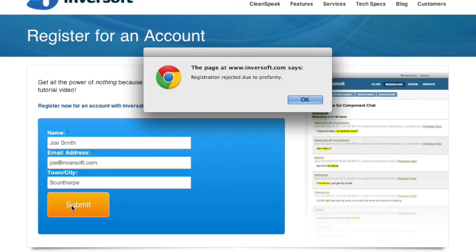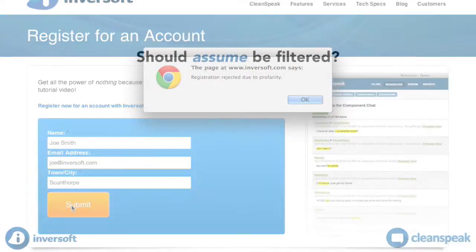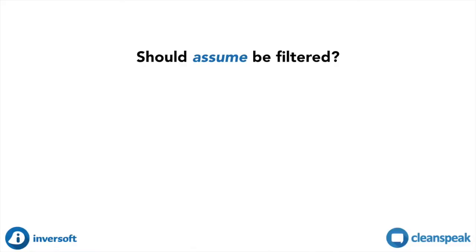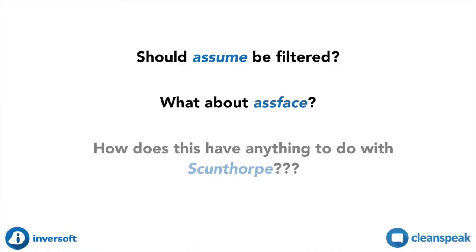Embersoft tackled this problem by introducing the concept of filter mode. For each entry on the CleanSpeak blacklist, a filter mode is assigned to tell the filter how the entry should be filtered, particularly when it's next to other letters and numbers.